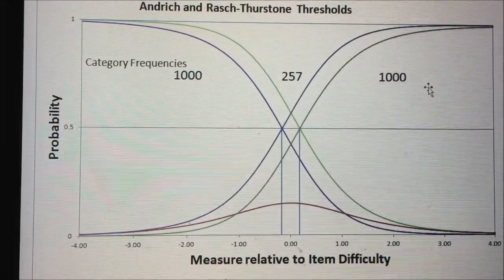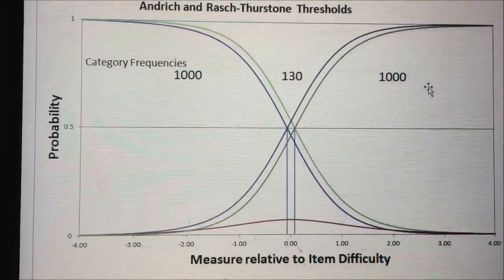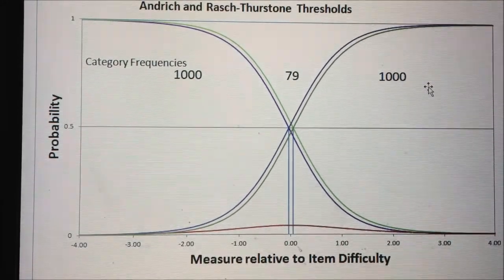When the thresholds cross, those Andridge thresholds are disordered and they disappear from this plot.